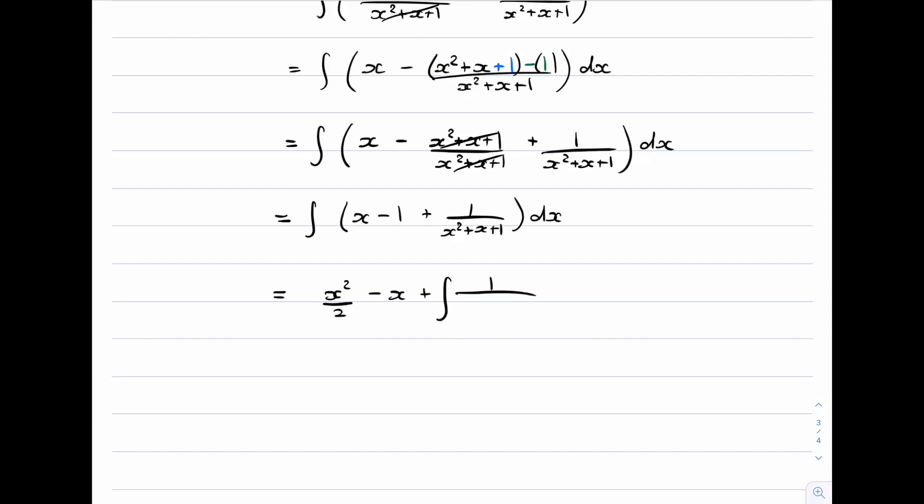So when we complete the square here, let's say that would be x plus a half all squared plus a quarter. And now hopefully you'll recognize that this is going to be the standard form of the inverse tan function. And that's actually on the standard integrals that's given to you in an exam.